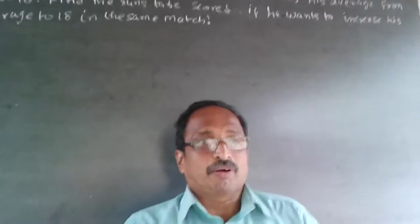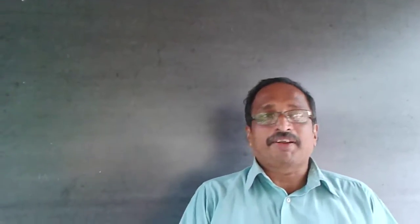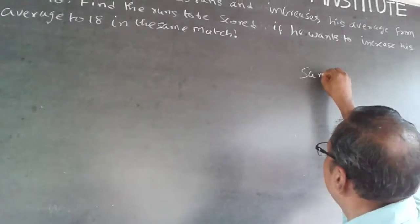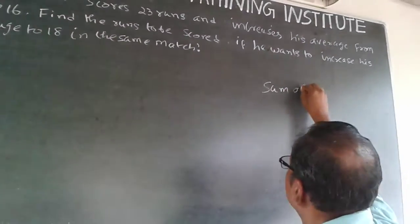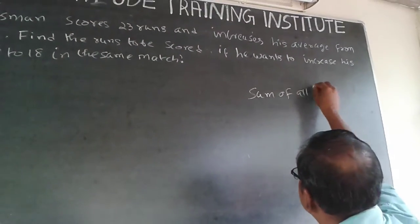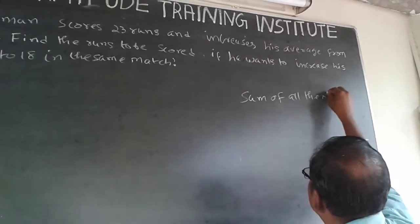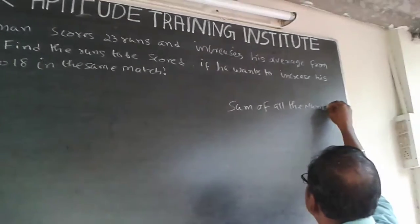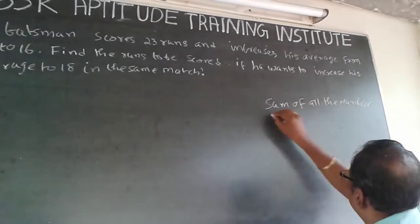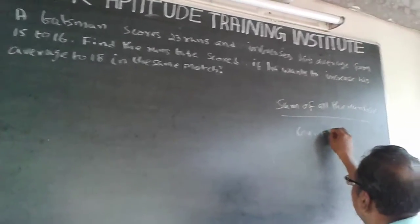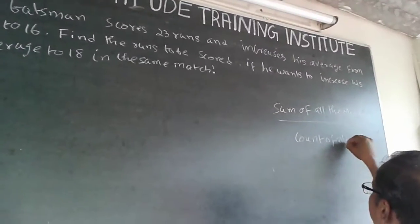Now this is an average problem. Average is nothing but the sum of all the numbers divided by the count of all the numbers.